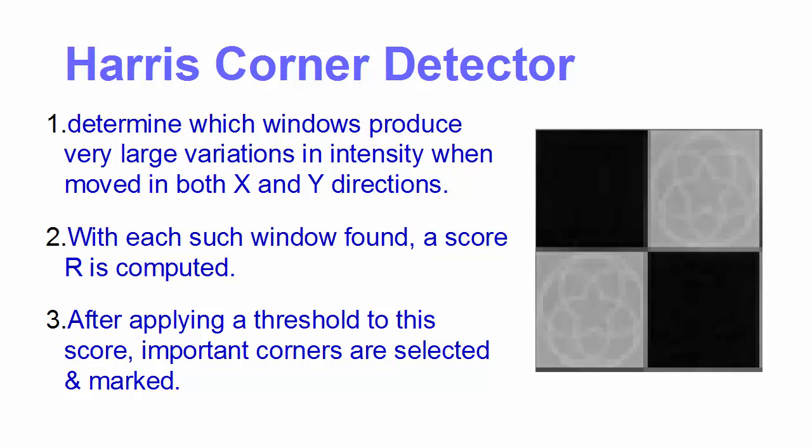In the second step, with each such window which we found, a score R is computed. This R value gives us an estimate or an idea about where this corner is located depending upon the value of R. In the third step, after applying a threshold to this score, the important corners are selected and marked.